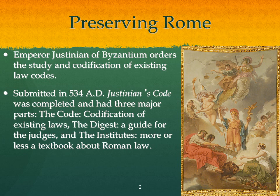In 534 Common Era, Justinian puts this together, and it really is an attempt to both preserve the law and to adapt the law to a larger group, specifically the Byzantine Empire itself. Justinian's Code had three major components. There was the Code, which took the law and codified it so it could be applicable to different characteristics. There was the Digest, which was useful for judges who needed to ascertain when or if a law had been broken, and what the punishment should be. And finally, there was the Institutes, which was basically a collection of what Roman law had been.